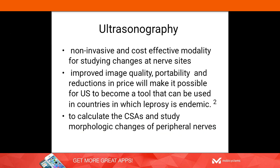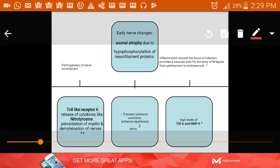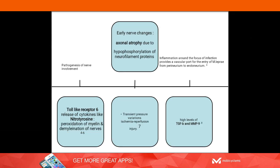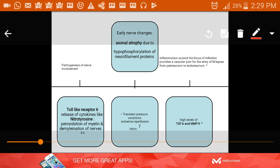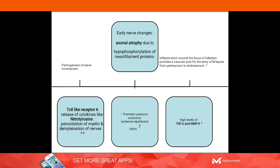Ultrasound is also used to calculate the cross-sectional area and to study anatomical changes of peripheral nerves. Early nerve changes include axonal atrophy due to hypophosphorylation of nerve proteins, resulting in inflammation around the nerve and increased entry of M. leprae — the bacteria — from the perineurium to the inner nerve covering called the endoneurium. There is also upregulation and release of chemicals such as nitrotyrosine and matrix metalloproteases.